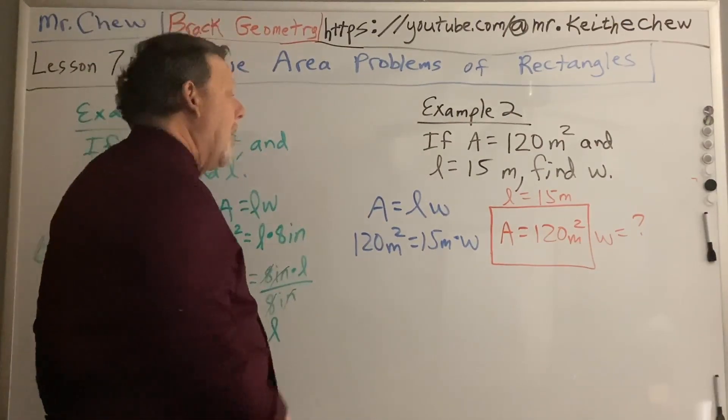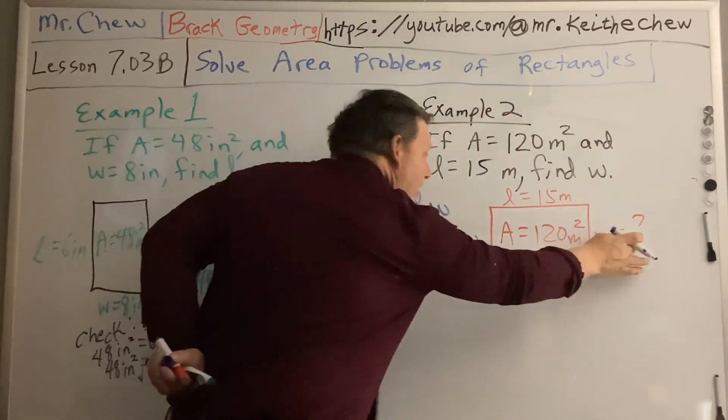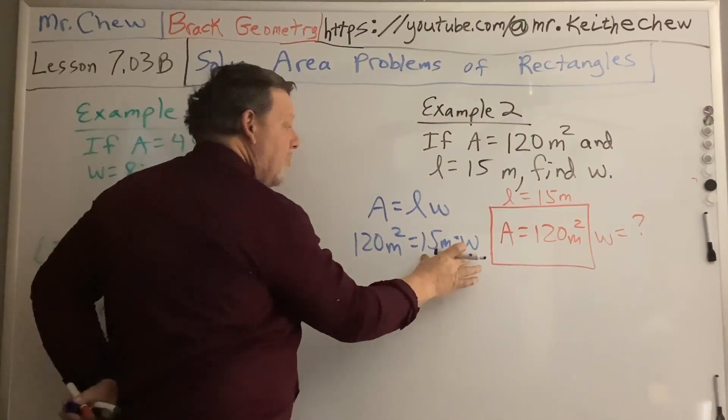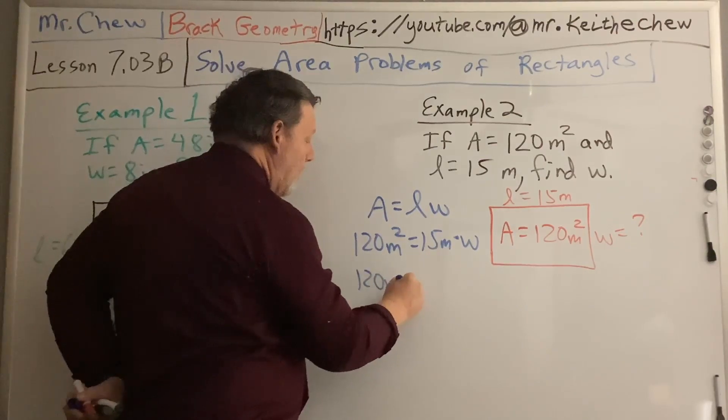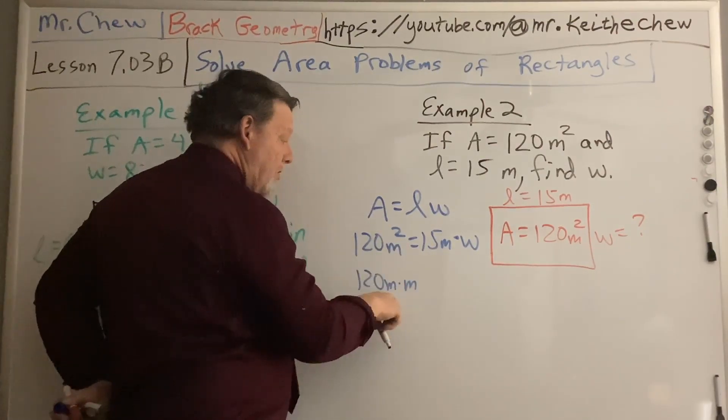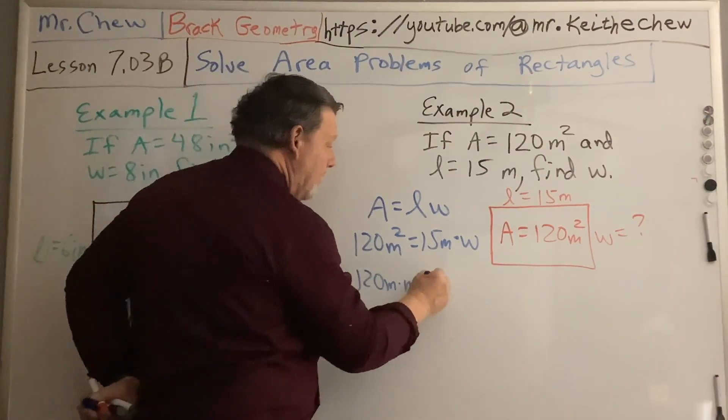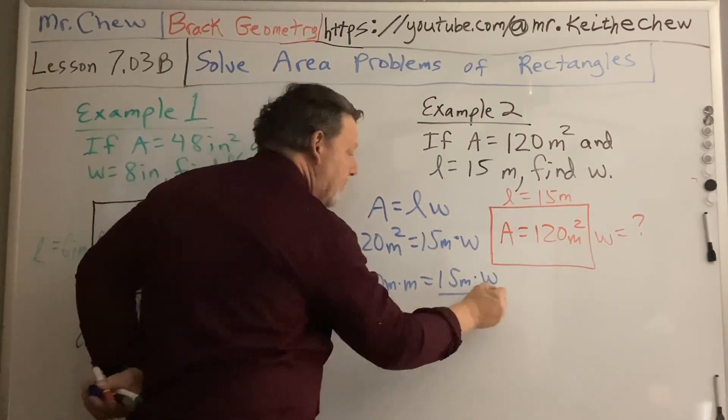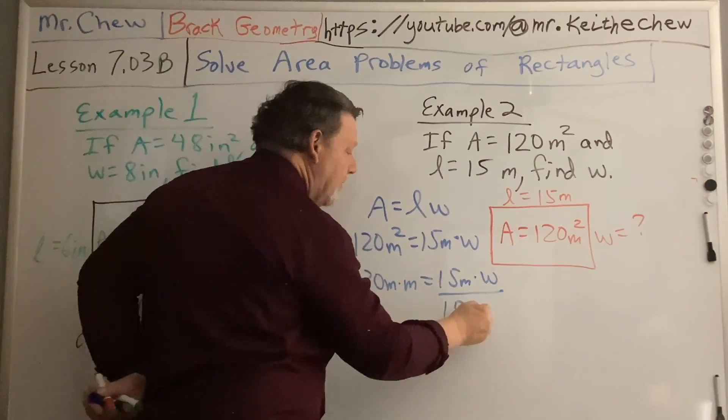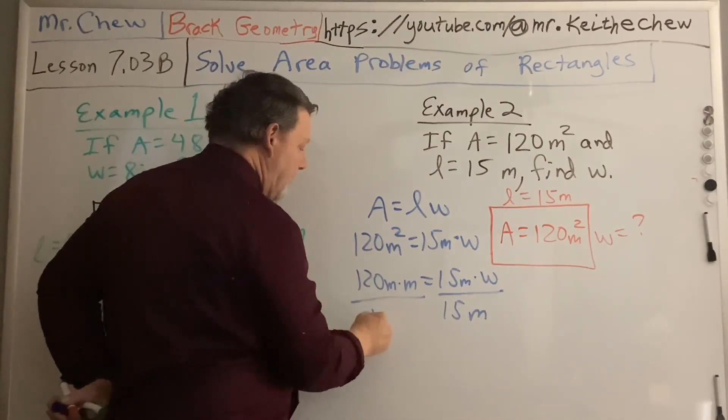Now remember, I want to get W by itself. So I'm going to do the division property of equality. When I'm solving this one-step equation, I write meters squared as meters times meters. And I divide the right by 15 meters, and the left by 15 meters.